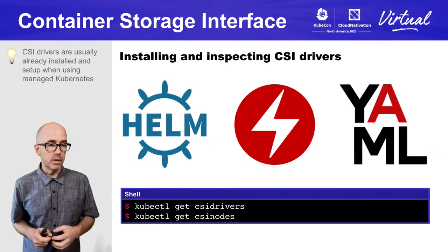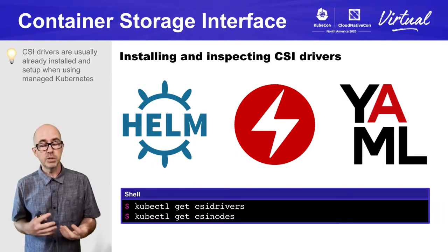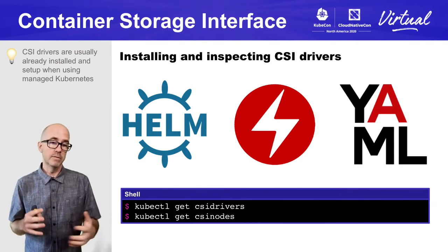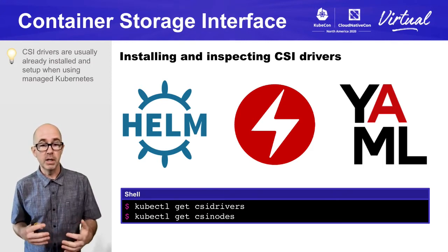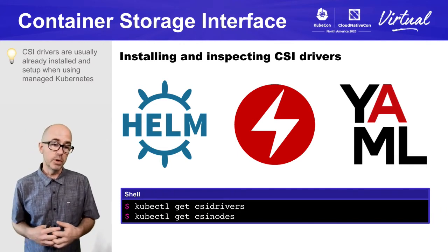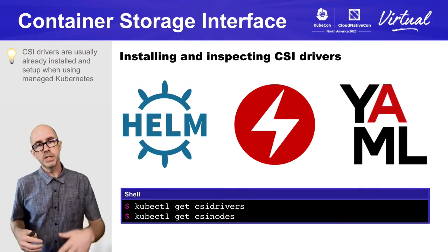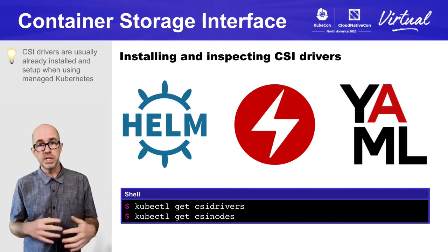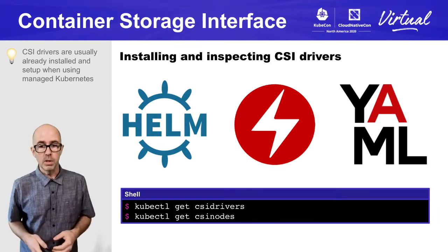Now we're approaching the first hands-on lab: installing and inspecting a CSI driver. You can find most drivers on artifacthub.io. Most install as Helm charts, some have full operators, and some reference a config file in a GitHub repo. Once you have a driver installed, you can run `kubectl get csidrivers` to list installed drivers and their capabilities, and `kubectl get csinodes` to see which nodes have CSI drivers and what drivers they have.